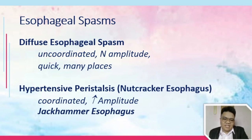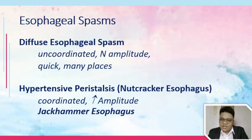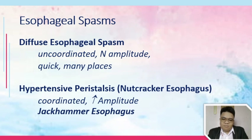Then we have hypertensive peristalsis, also known as nutcracker esophagus. In hypertensive peristalsis, movement seems coordinated; however, there is increase in amplitude or pressure in your esophagus. This can result in what is referred to as jackhammer esophagus — an extreme form of hypertensive peristalsis wherein the entire esophagus is involved for a prolonged period of time, meaning the involuntary contractions of the entire esophagus are already prolonged.